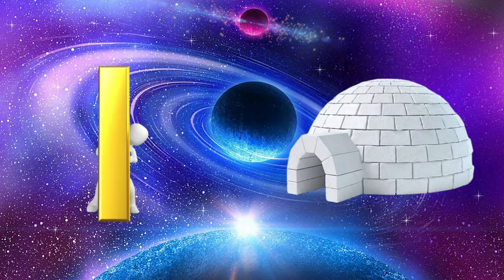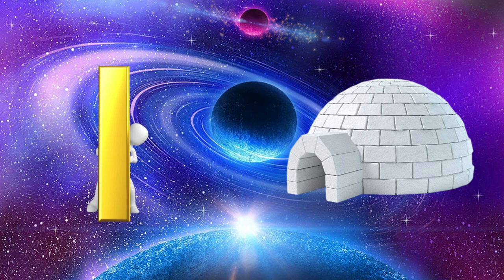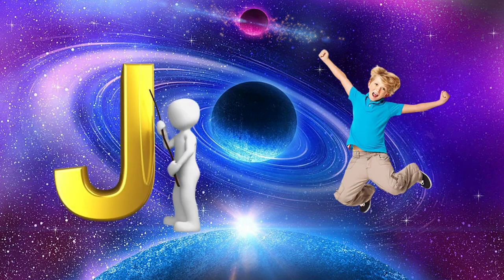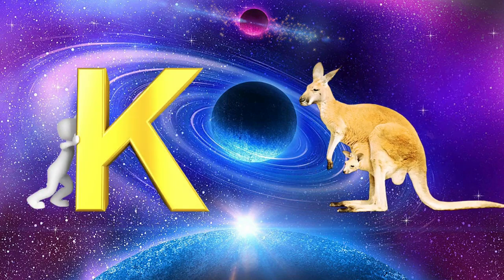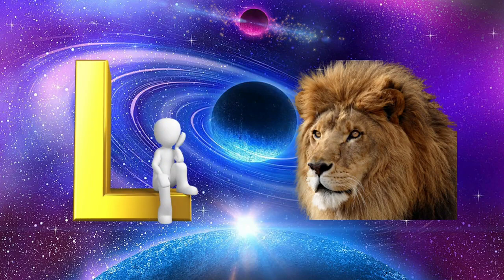I is for igloo, i-i-igloo. J is for jump, j-j-jump. K is for kangaroo, k-k-kangaroo. L is for lion, l-l-lion.